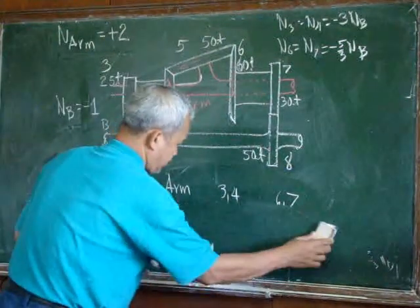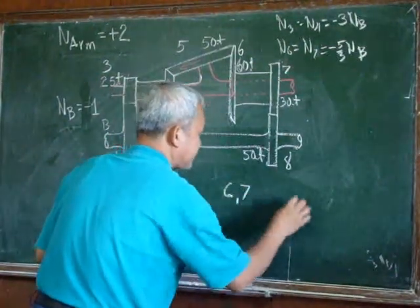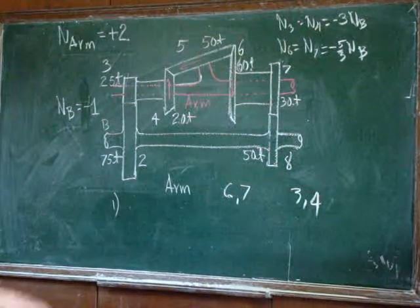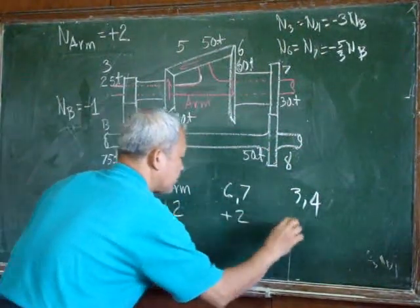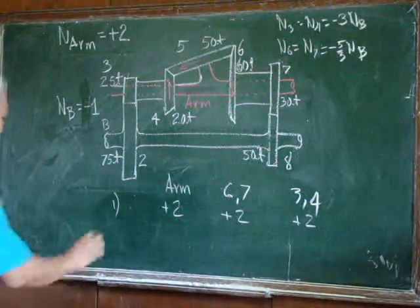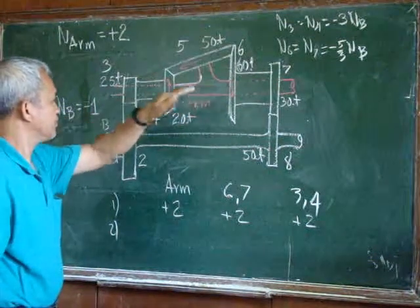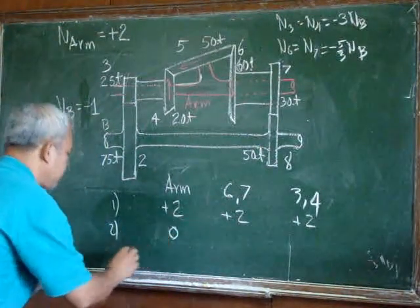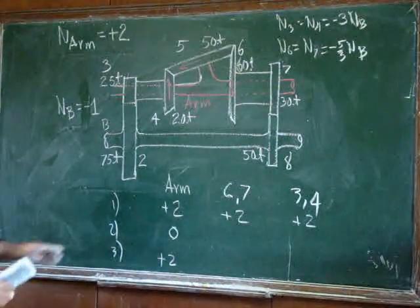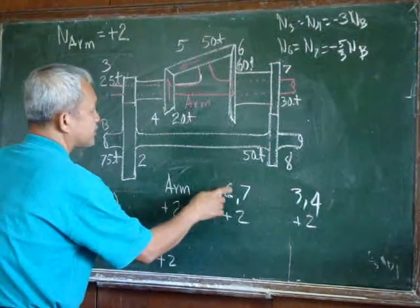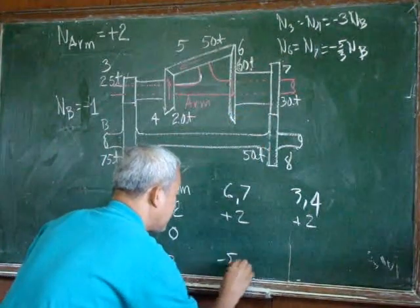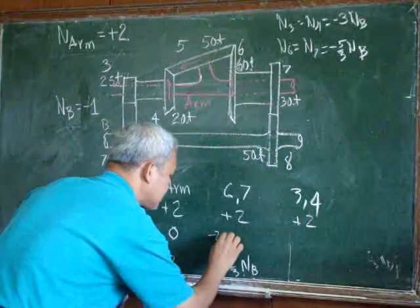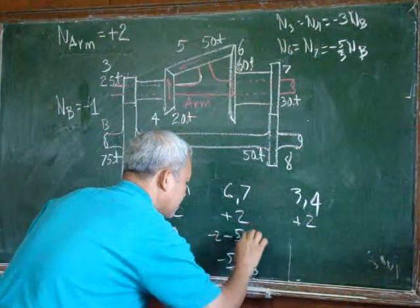The other approach is to consider gears six and seven first, then gears three and four, following the same steps. We rotate everything plus two, plus two, plus two, and plus two. Next step: fix the arm and rotate the parts. The arm has zero rotation, the result for gears three and four is negative two, and for gears six and seven the result will be negative five over three times NB. That means negative two here, minus five over three times NB.